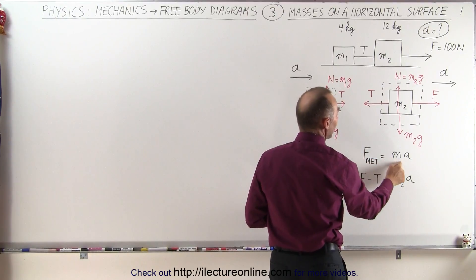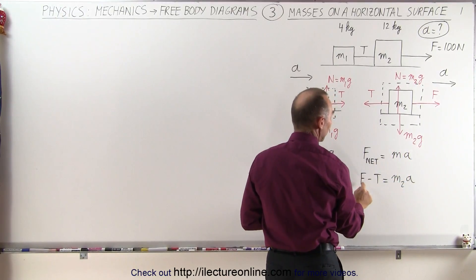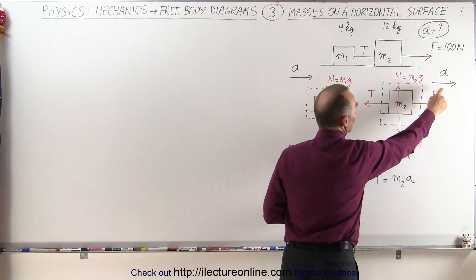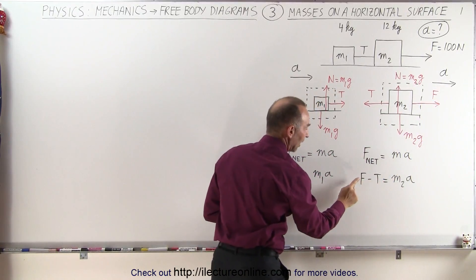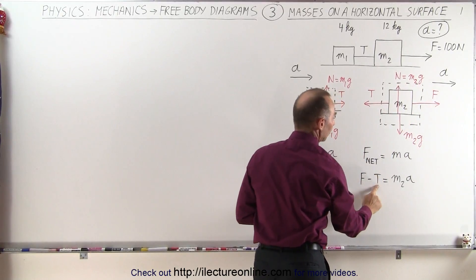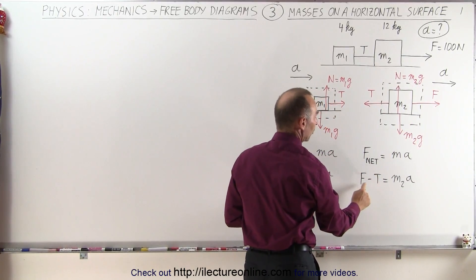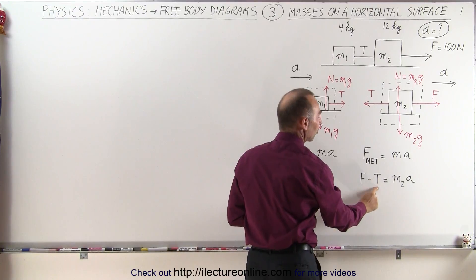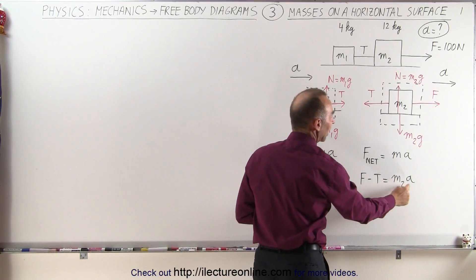Again the net force equals the mass times the acceleration. In this case the force here is in the same direction as the acceleration so this is aiding the acceleration, and the tension is in the opposite direction to the acceleration so this tension is opposing the acceleration. So the force aiding minus the force opposing equals the mass times acceleration.